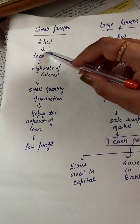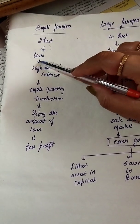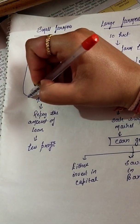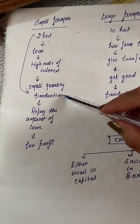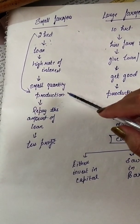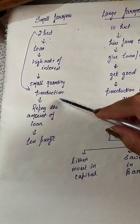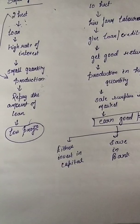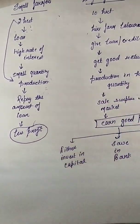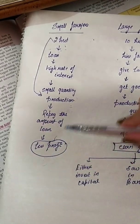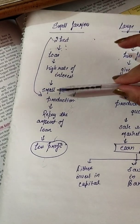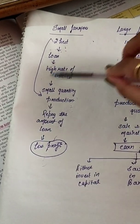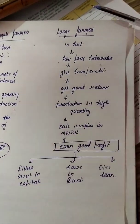Consider a small farmer with two hectares of land. For capital they need a loan; in return they pay a high rate of interest. Because the land is small, production is small. After selling the production and repaying the loan with interest, the profit is very little — only enough to survive, only enough to earn their livelihood. So this is the condition of small farmers: small land, small production, borrowed capital, high interest, and very little profit.